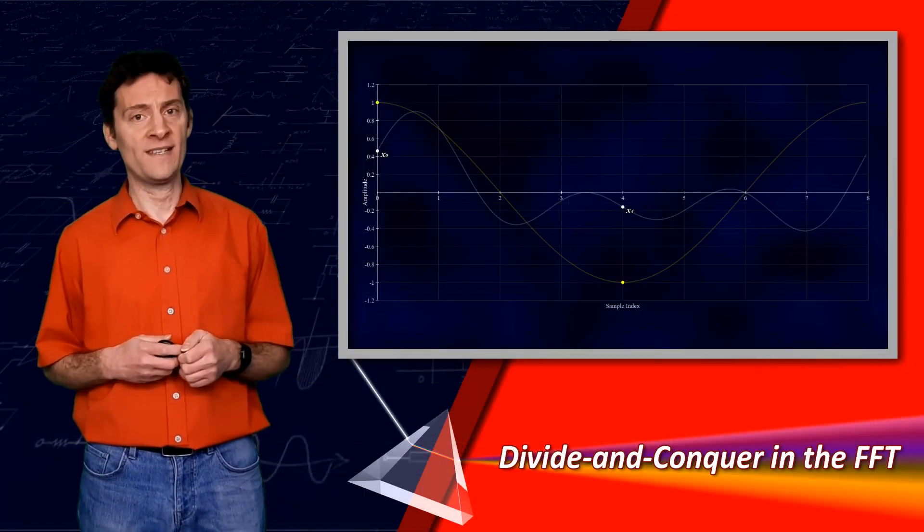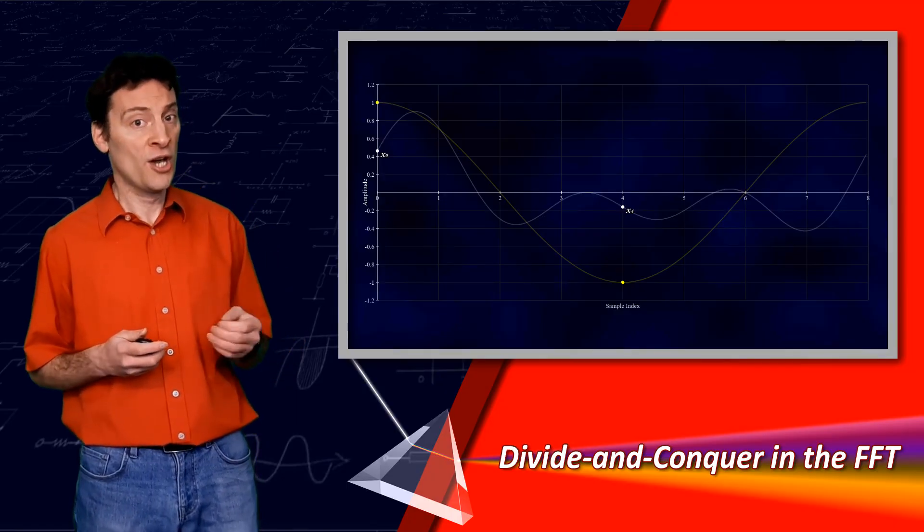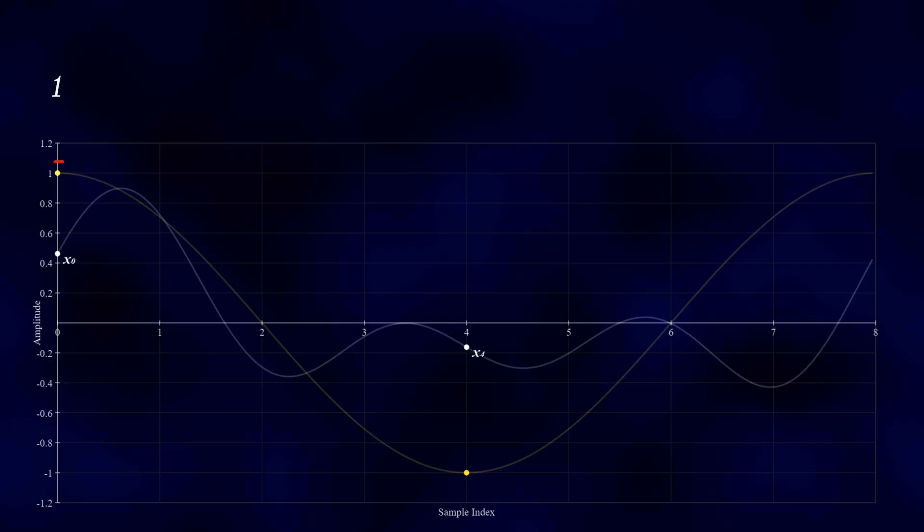Now let's move on to the next frequency, 1. What are the amplitudes of the two samples on a cosine wave at this frequency? Well, they are 1 and minus 1. Multiplying the corresponding signal samples by these values scales by 1 and minus 1 respectively.